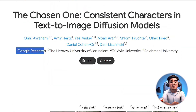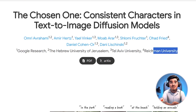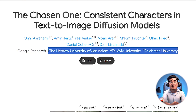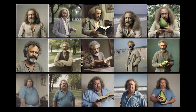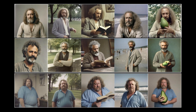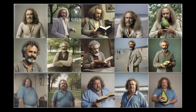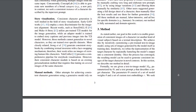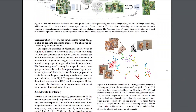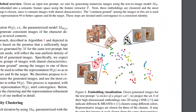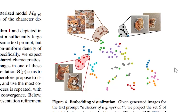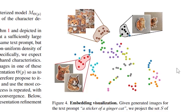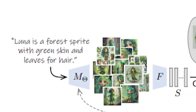This amazing work is a joint effort between Google and some top universities. They tackled a big issue in AI-generated images: keeping characters looking the same across different scenarios. The team developed a way to use just a simple text prompt to make characters that stay consistent no matter the setting.